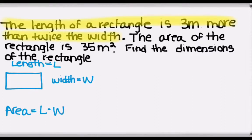We're given in the problem that the length is 3 meters more than twice the width. So this means we can write length in terms of W, and that gives us L is equal to 2W plus 3. The 2 times W means twice the width, and the plus 3 is saying 3 more than that.